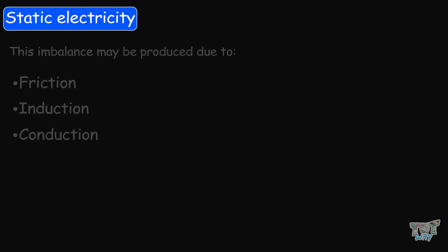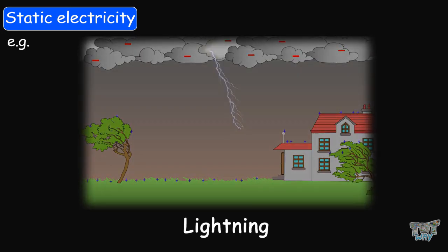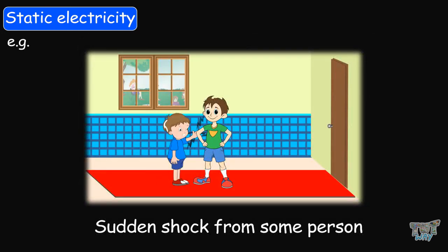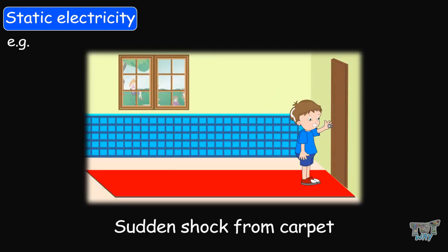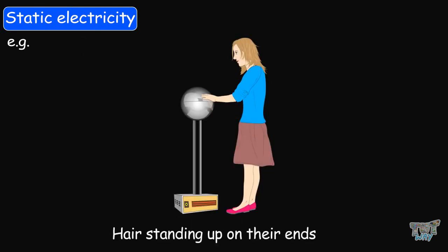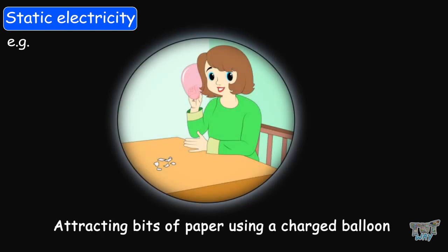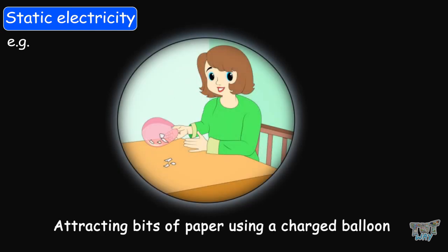For example, lightning, sudden shocks from one person, sudden shocks from the carpet, hairs standing up on their ends, or attracting bits of paper using a charged balloon — all of these are examples of static electricity.